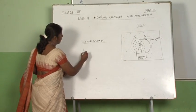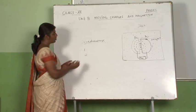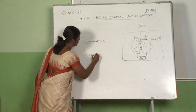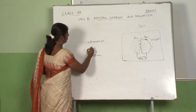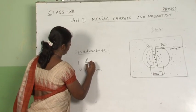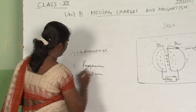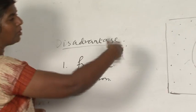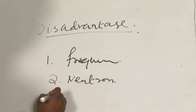First is the resonance frequency condition, and second, you will not be able to accelerate neutrons in this cyclotron.